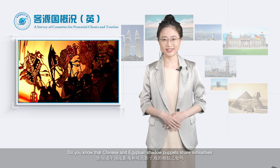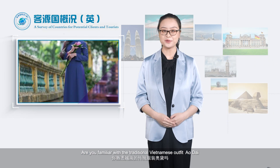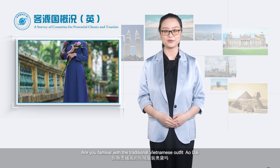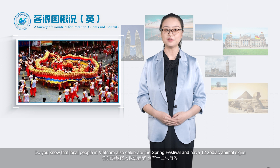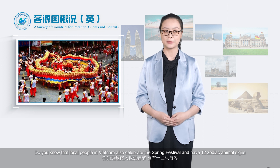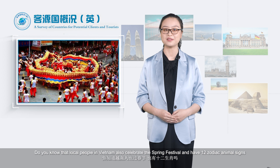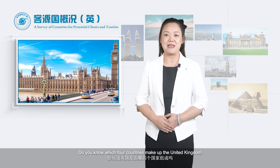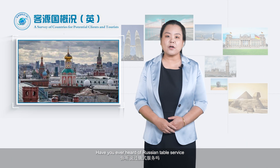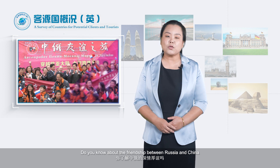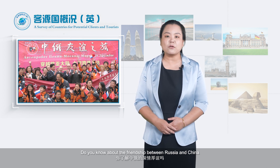Do you know that Chinese and Egyptian shadow puppets share similarities? Are you familiar with the traditional Vietnamese outfit, Ao Dai? Do you know that the local people in Vietnam also celebrate the Spring Festival and have 12 zodiac animal signs? Do you know which four countries make up the United Kingdom? Are you excited to compare and contrast the tea culture in China and the United Kingdom? Have you ever heard of Russian table service? Do you know about the friendship between Russia and China?